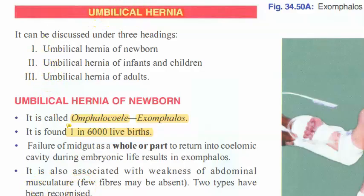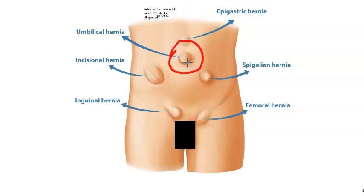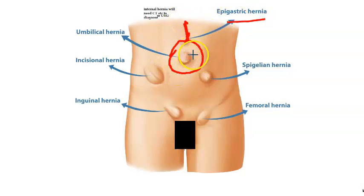In this video, let us look at umbilical hernia - hernia coming from the umbilicus. Looking at a photo, this is coming from the umbilicus. If it comes around the umbilicus, it becomes para-umbilical hernia. And if it is below the xiphisternum, that becomes an epigastric hernia, which is marked here.